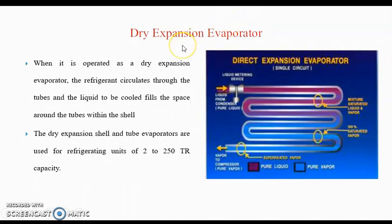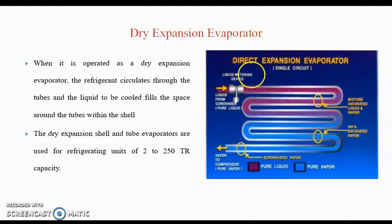The first is the dry expansion type evaporator. In the dry expansion type evaporator, the refrigerant circulates through the tubes and the liquid to be cooled fills the space around the tubes within the shell. So the refrigerant flows inside the tubes and water flows surrounding the tubes. This dry expansion shell and tube evaporator is used for refrigerant units from 2 to 250 tons capacity.